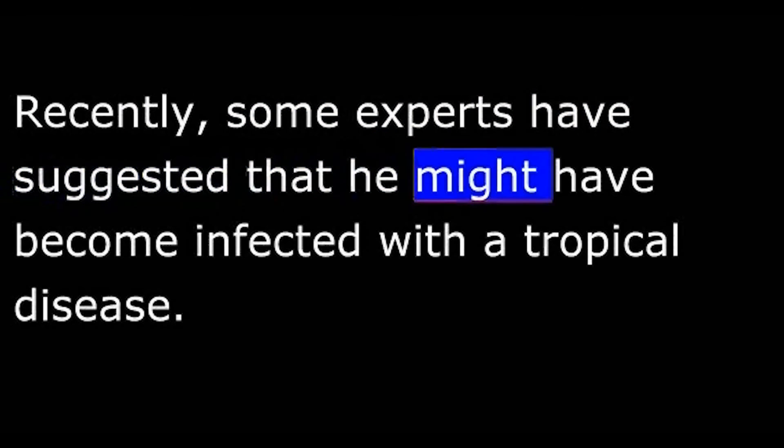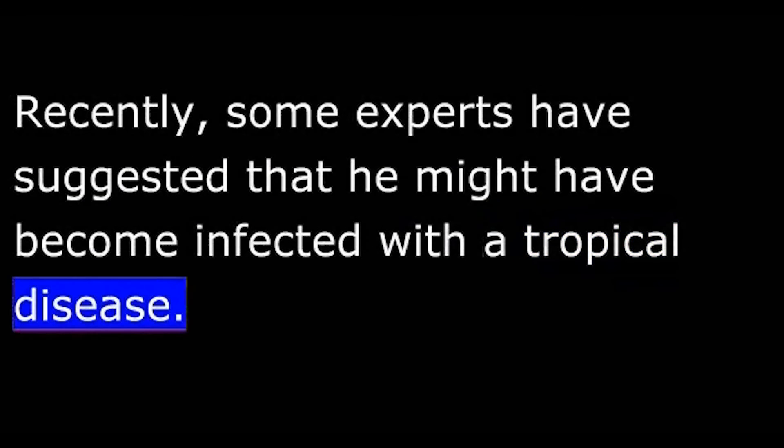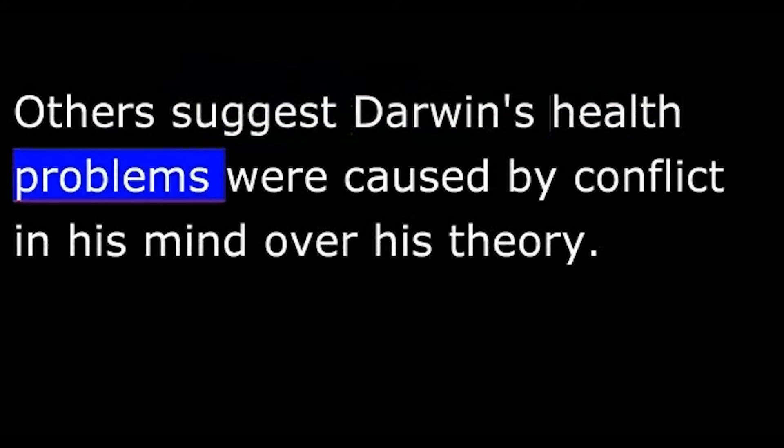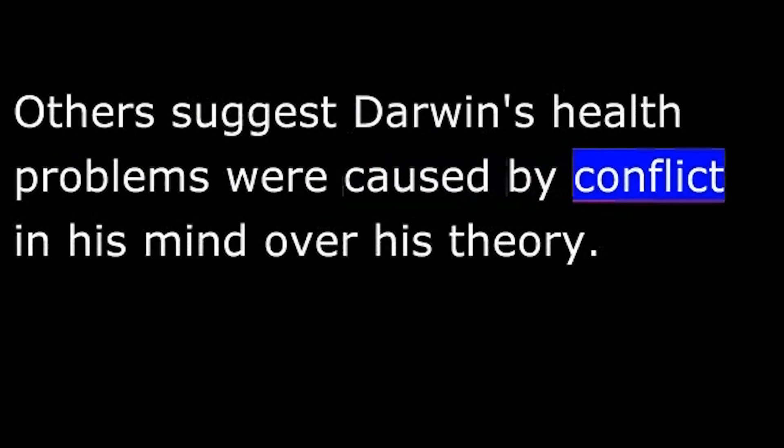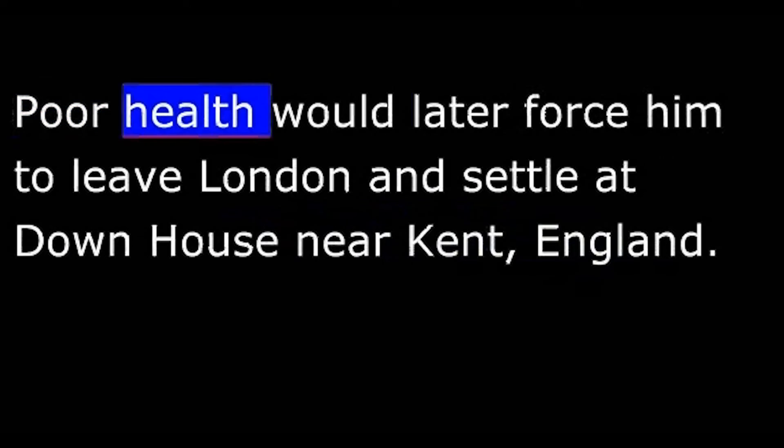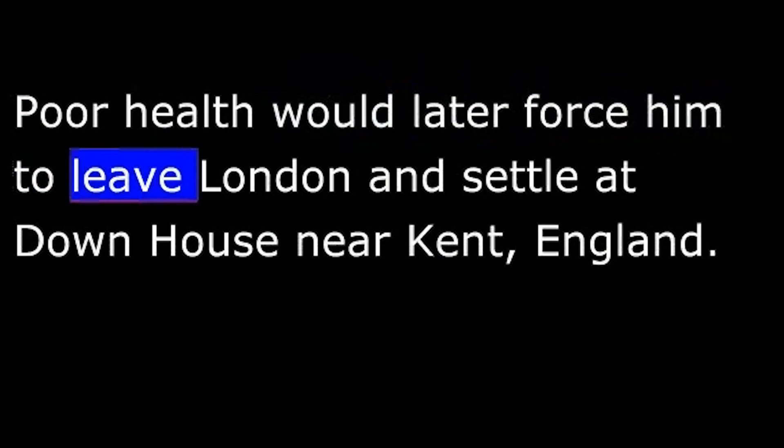Others suggest Darwin's health problems were caused by conflict in his mind over his theory. Poor health would later force him to leave London and settle at Down House near Kent, England.